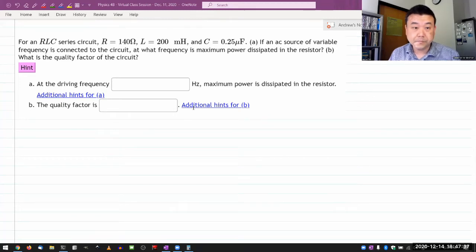So it says for an RLC series circuit, and it's giving me the component values: resistance, inductance, and capacitance.